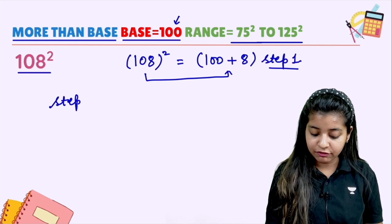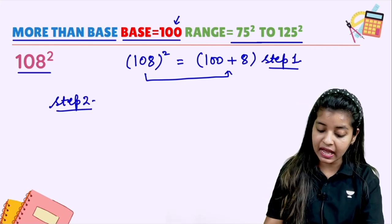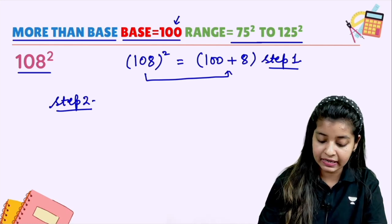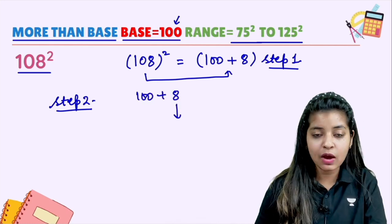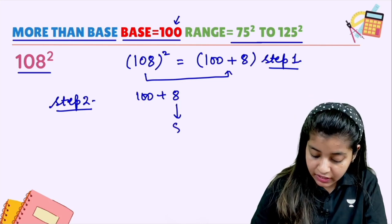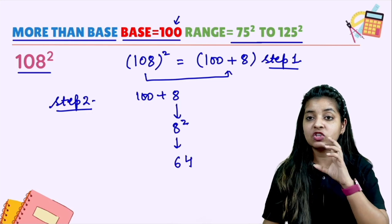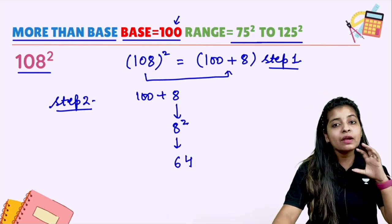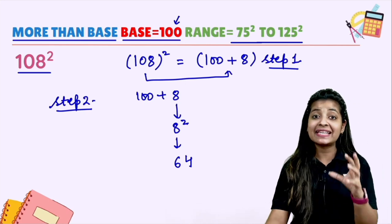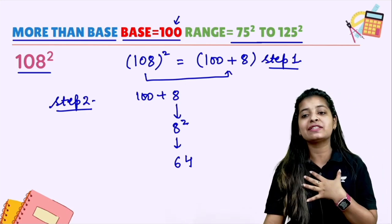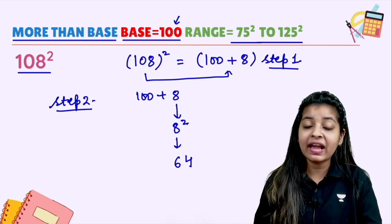Now let's move to Step 2. What does Step 2 say? Your number was 100 plus 8. You have to find the square of 8. When you square 8, you get 64. I am explaining it now, so it takes a little time. Once you understand it, we will solve it within some seconds — this is my guarantee everybody. So we wrote 8 squared as 64.